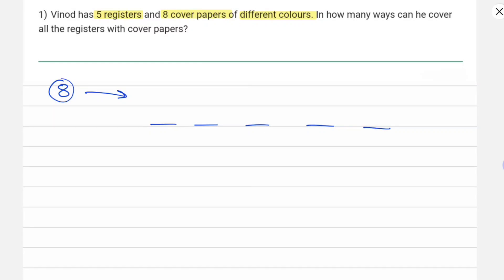So basically what we can do is we have to select 5 out of 8, right? So the method would be 8C5. And let's assume that the covers are named as A, B, C, D, and so on.